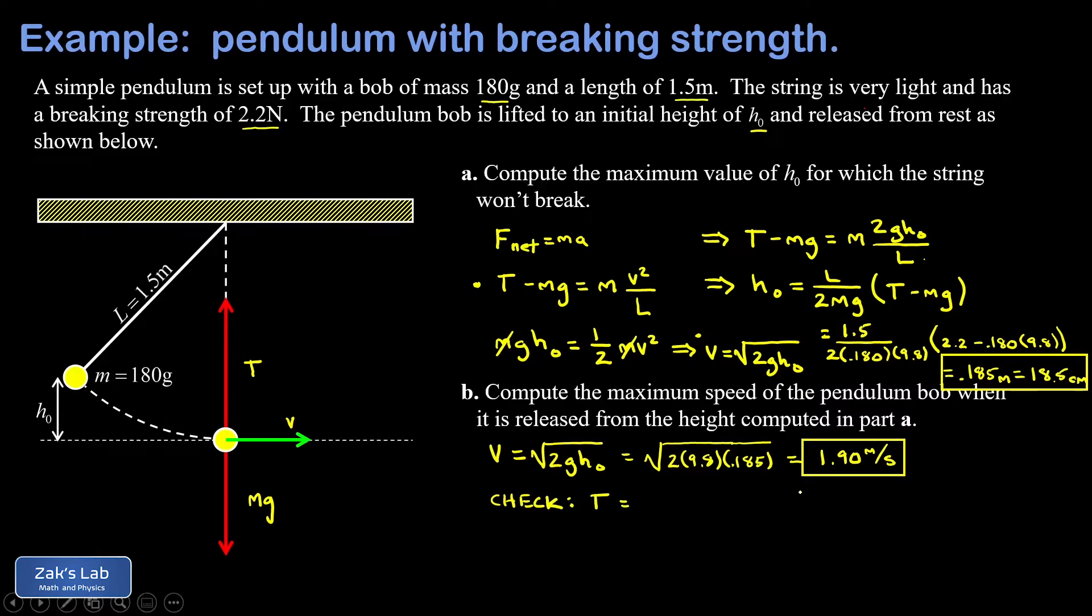And when I add mg to both sides of that, I can factor the m out. So I get m times the quantity g plus v squared over l. We plug in m, that was 0.180 kilograms. g, 9.8. v was 1.9, and that has to be squared. And l was 1.5. And when I run the numbers on this to three significant digits, it does round to 2.20 newtons. And we're done.